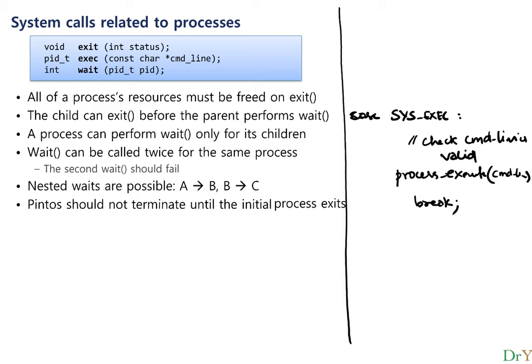Important things to remember for process-related syscalls: all process resources must be freed on exit. The child can exit before the parent performs wait — you must ensure the child doesn't disappear before the parent has reaped the exit status. A process can only wait for its own children, wait can only be called once per process, and nested waits are possible.